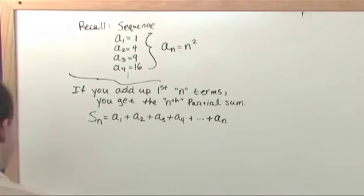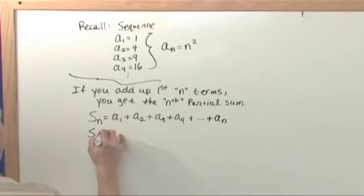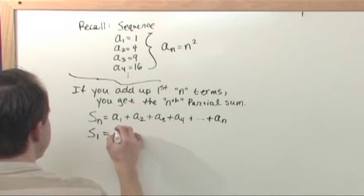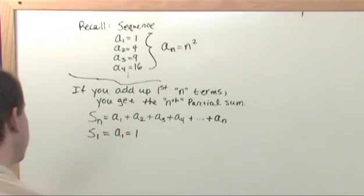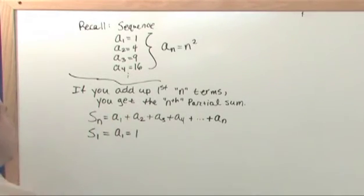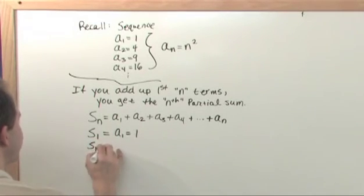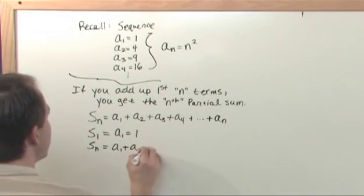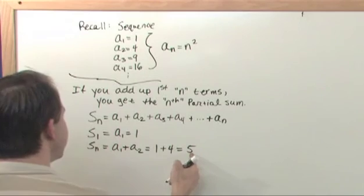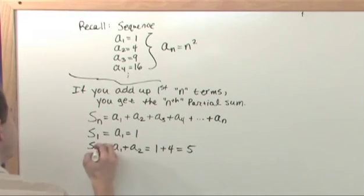So, in this case, the first partial sum, S sub 1, is just going to be equal to A1, which is equal to 1. You're not really adding it up to anything, because it's the first partial sum. You're adding whatever number you put in here for n, you're just adding up to that point in the sequence. So for the first one, you're really not adding anything. It's just the first number in the sequence. Now, the second partial sum would be A1 plus A2, which would be 1 plus 4, according to our sequence above, which is 5. So this should be S sub 2.